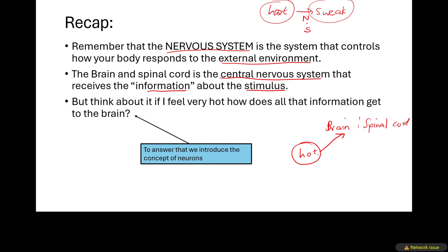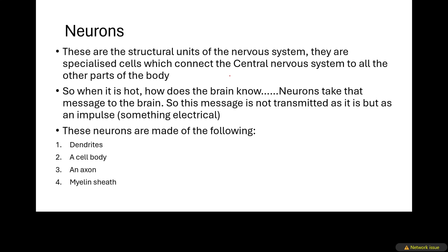The message that it is hot is transferred to the brain, but how is the message transferred from your skin all the way to the brain? That brings us to the concept of neurons. Neurons are the structural units of the nervous system, meaning they are the ones making the nervous system possible — the ones making the body's response to heat possible. These are specialized cells.